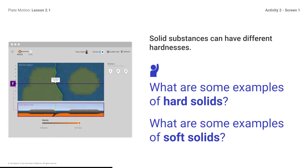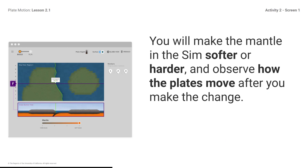Solid substances can have different hardnesses. What are some examples of hard solids? What are some examples of soft solids? The surface of a school desk is a hard solid. Chewing gum and modeling clay are soft solids. You will make the mantle in the sim softer or harder and observe how the plates move after you make the change. This will help you figure out what the solid material of the mantle is like.